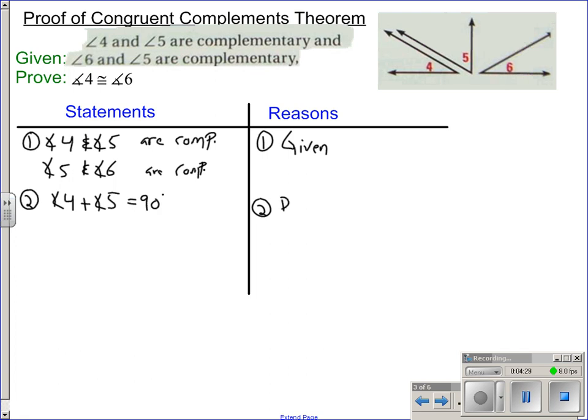Why is that true? That's the definition of complementary. Definitions are true. So, we're using known, true statements to make new statements. We can do the same thing and for the same reason to say angle 5 plus angle 6 equals 90. So, technically, this is statement 3. The reason for 3, it's the same thing. 5 and 6 are complementary. That means they add to be 90 degrees. So, definition of complementary justifies statement 3.